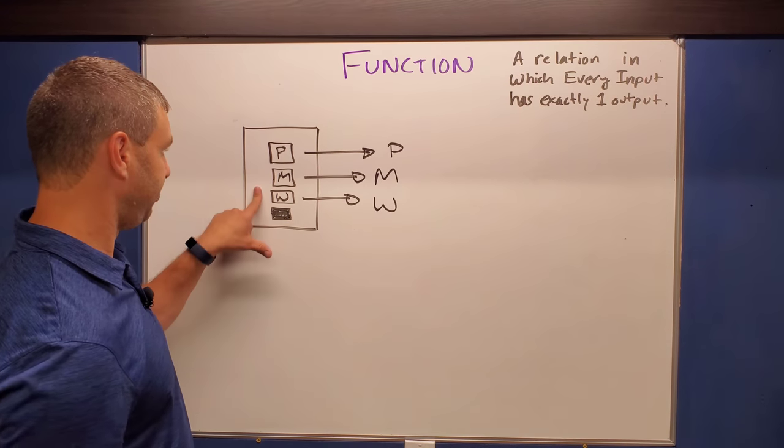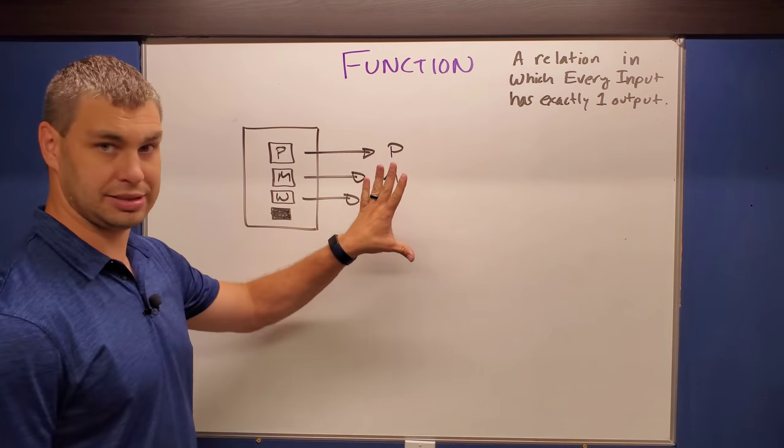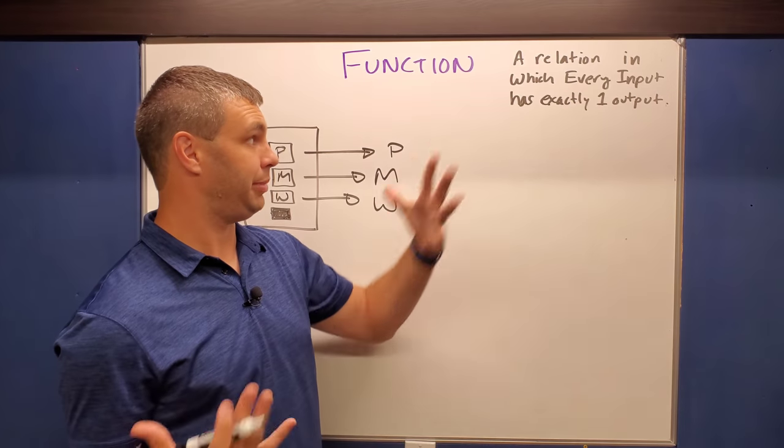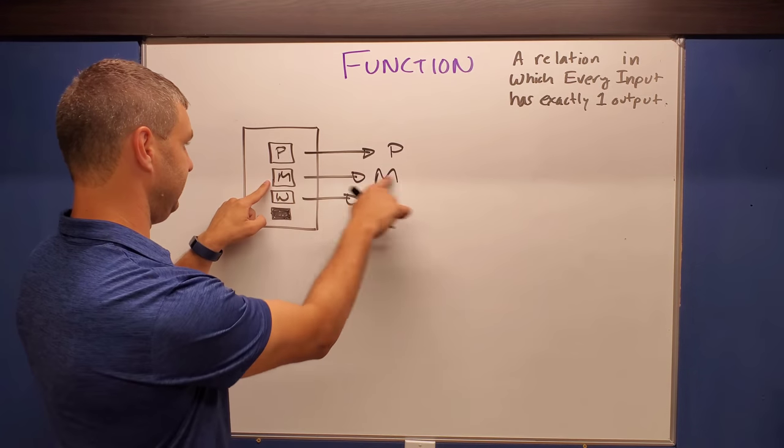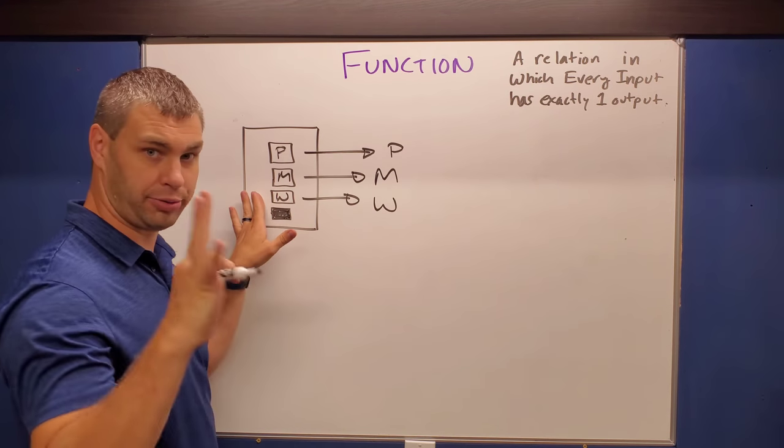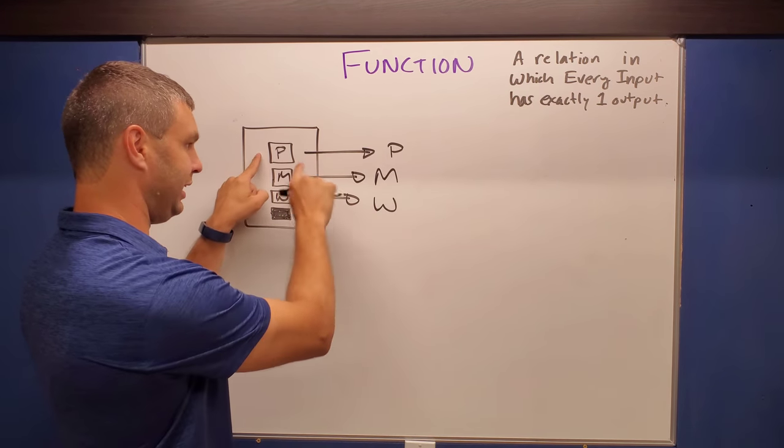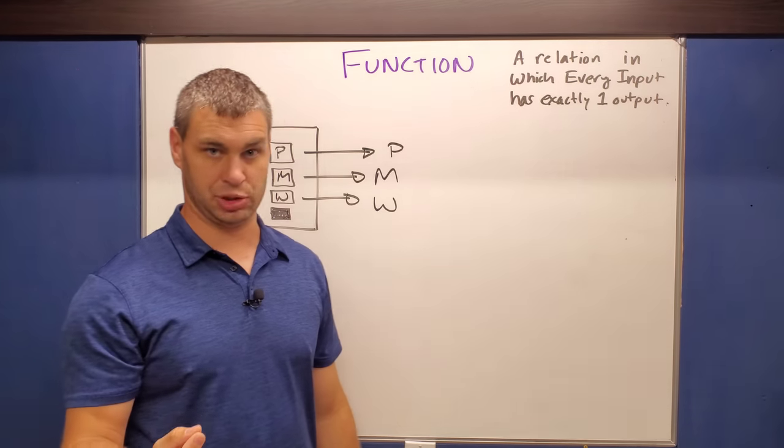So let's look at what we did here. These were my inputs. These were my outputs. Did I get a function? Did I make a function? So every input has exactly one output. Yes, yes, yes. All the inputs, all three inputs, have exactly one line coming out from them. So that is a function.